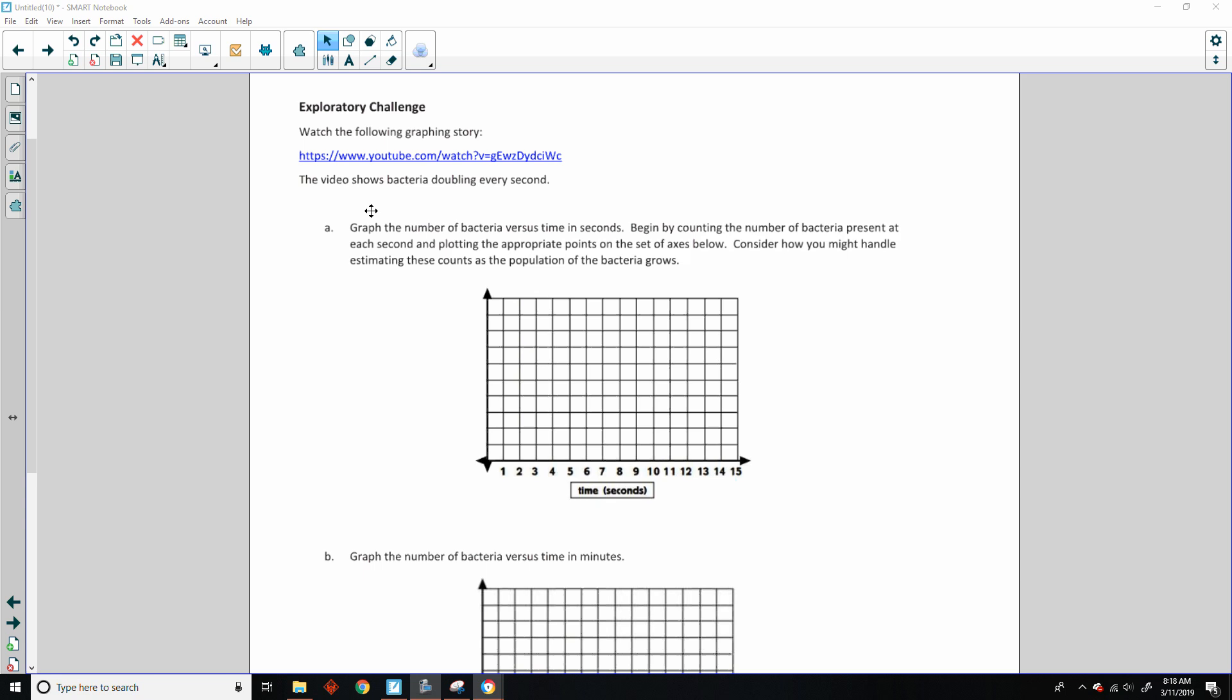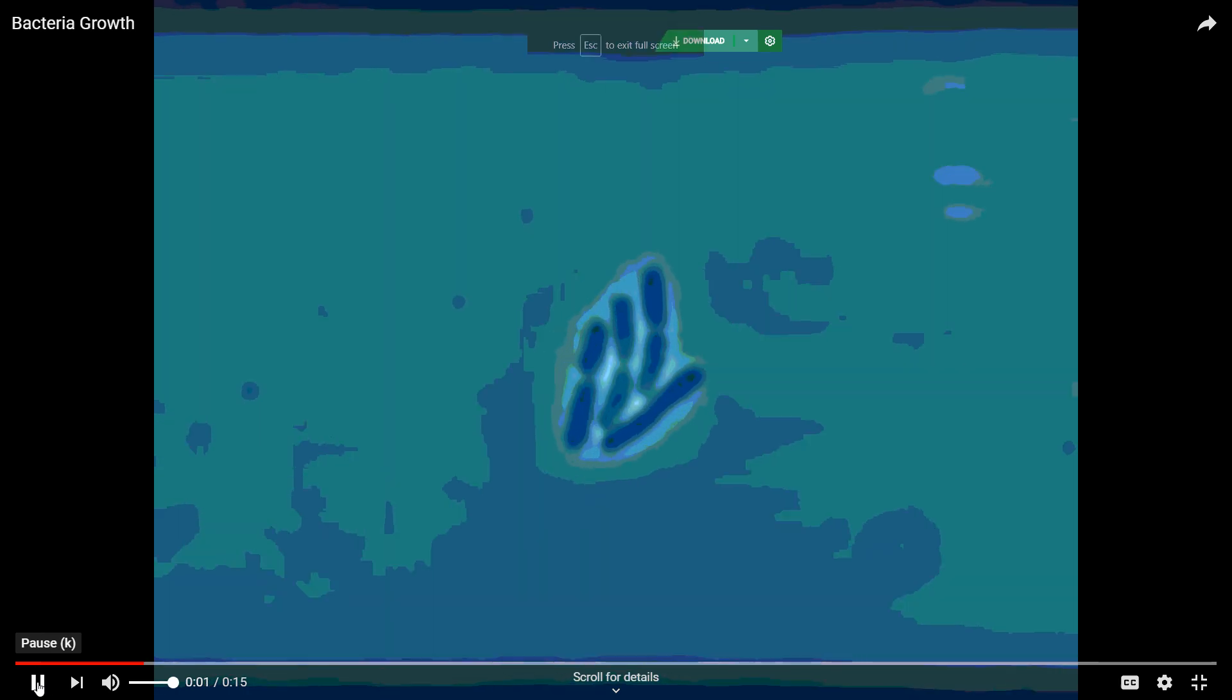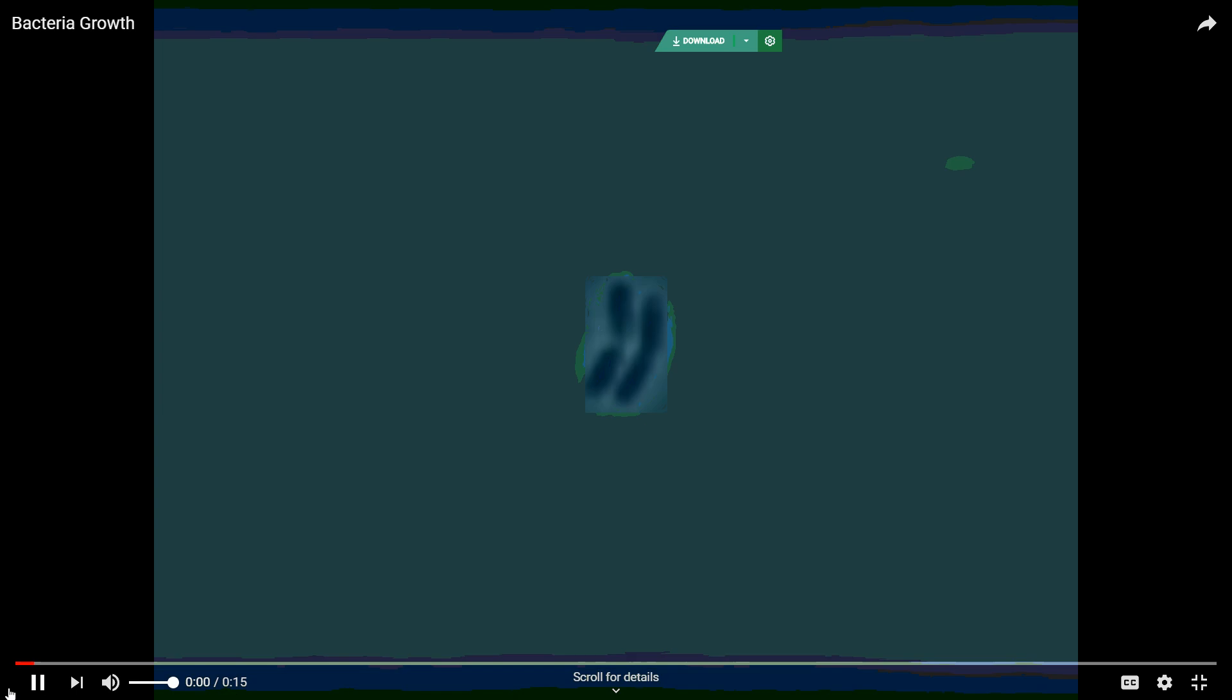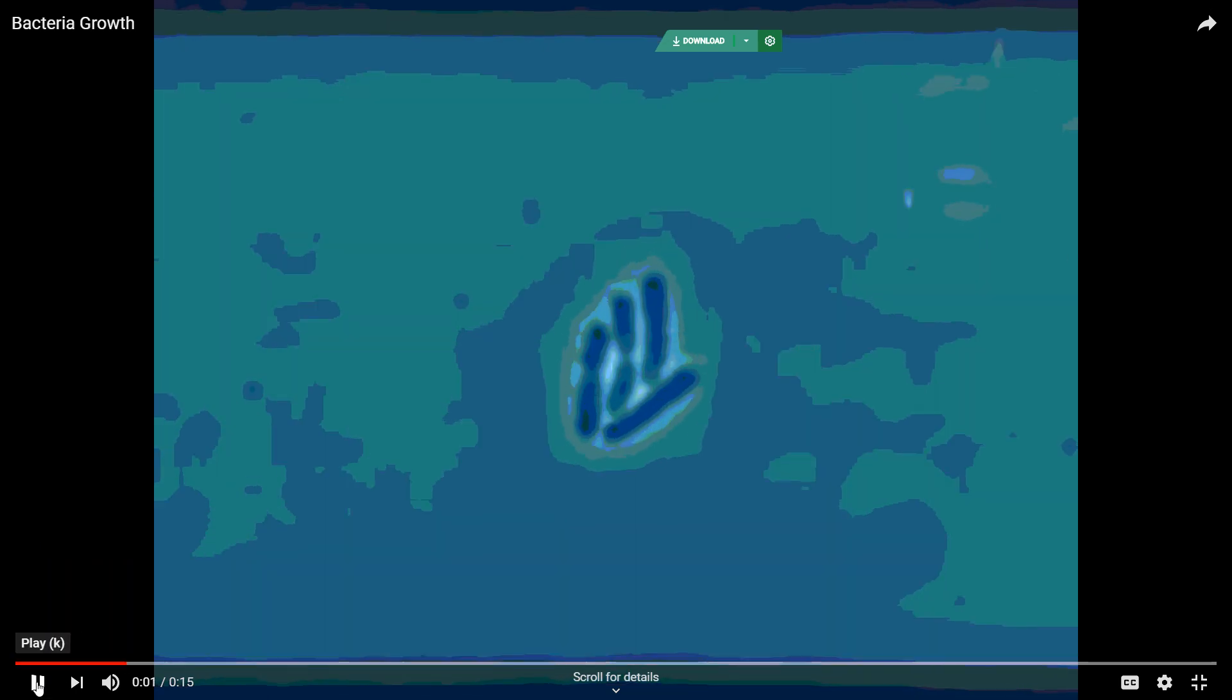Okay, exploratory challenge. Watch the following graphing story. Here's a link to a YouTube video. The video shows bacteria doubling every second. Graph the number of bacteria versus time in seconds. Begin by counting the number of bacteria present at each second and plotting the appropriate points on the set of axes below. Consider how you might handle estimating these counts as the population of bacteria grows. So what I have done is gone to this link. It is right here. I will play it. It's a 15 second video. So this is a video within a video. So let me start that over. So at 0 seconds, we have 2 bacterium. At 1 second, we have 4. So I'm going to write these down as I'm doing this. And I'm going to do it on a separate sheet of paper, and then I'll copy it over.